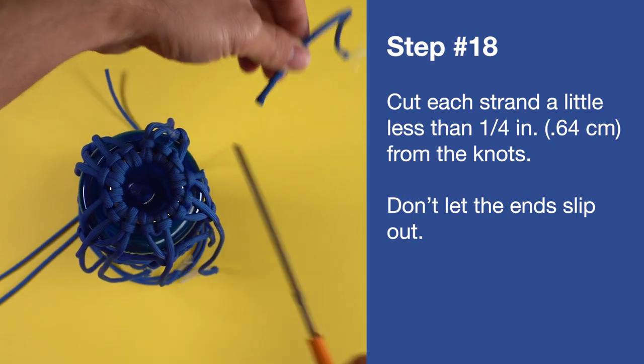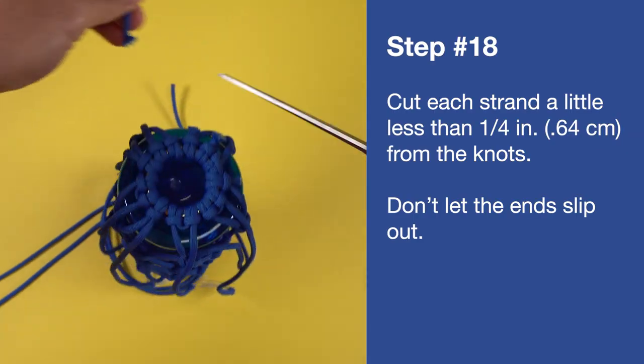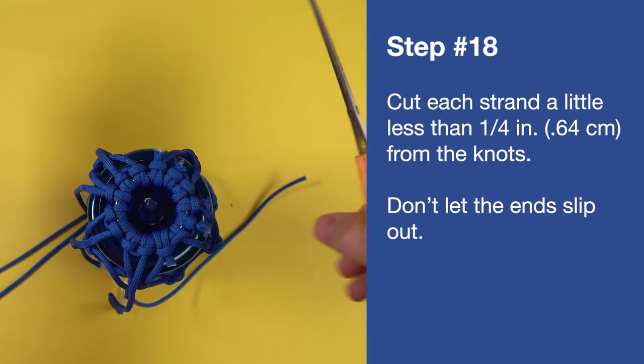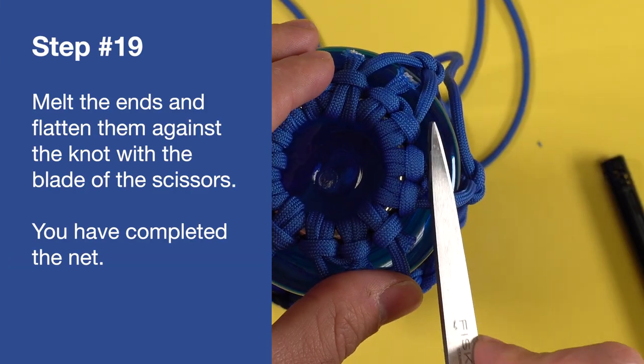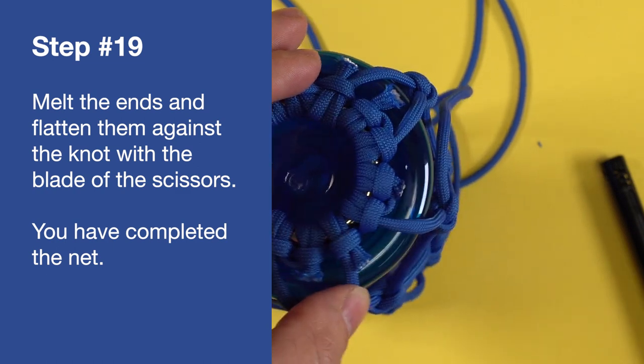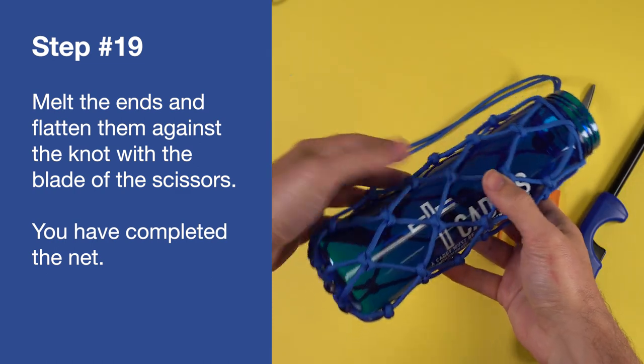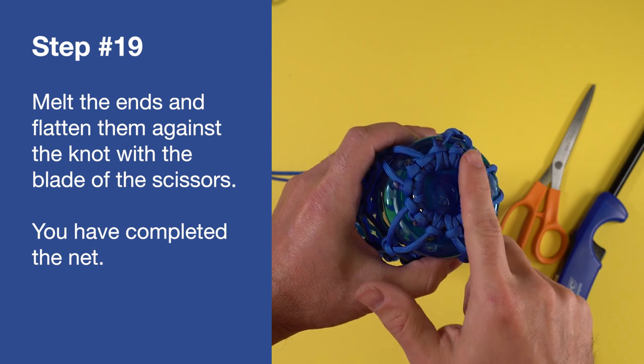Cut each strand a little less than a quarter inch from the knots. Don't let the ends slip out. Melt the ends and flatten them against the knot with the blade of the scissors. Help from counselors may be needed for this portion. You have completed your net.